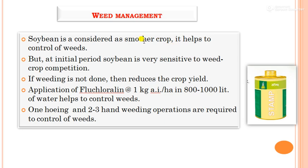For weed management, soybean acts as a smothering crop — meaning it has vigorous and quick growth that helps suppress weeds. However, at the initial period soybean is sensitive to crop-weed competition, and uncontrolled weeds reduce crop yield. Chlorimuron at 1 kg active ingredient per hectare in 800 to 1000 liters of water helps control weeds. One hoeing and two to three hand weeding operations are also required.